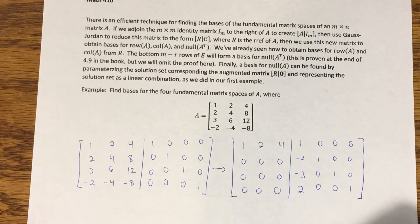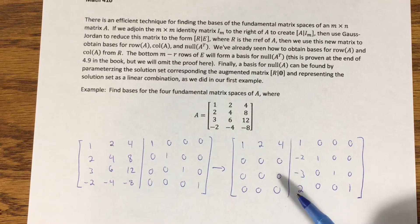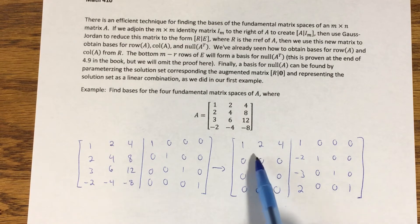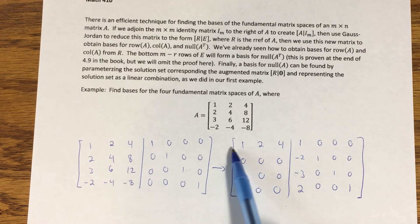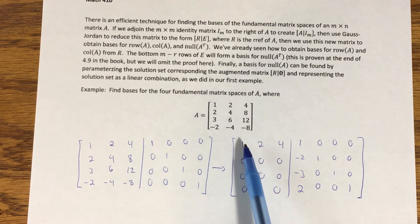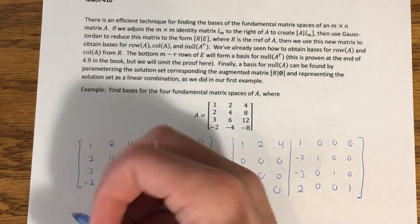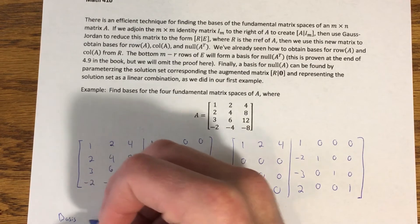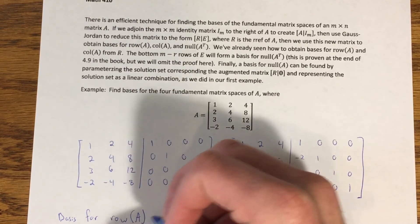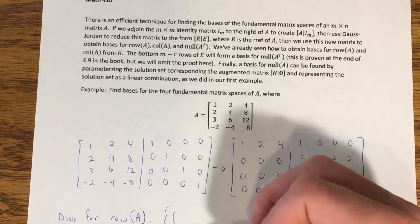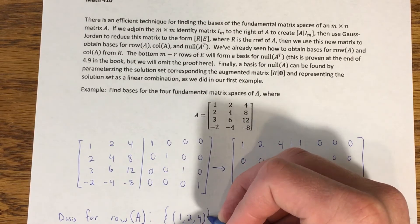Now let's think about how we use this to find bases for our row space and column space. For the row space, after row reducing we look for where the leading ones occur. The leading one occurs only in the first row. So the nonzero rows of the row-reduced form become the basis. This vector 1, 2, 4 by itself is sufficient as a basis for the row space of A.